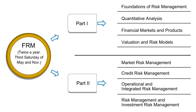The FRM exam consists of two parts, both offered twice a year on the third Saturday of May and in November. Part One is an equally weighted 100-question multiple choice exam offered in the morning of the exam day, and Part Two is an equally weighted 80-question multiple choice exam offered in the afternoon. The syllabus of FRM Part One as well as FRM Part Two is listed on the slide.